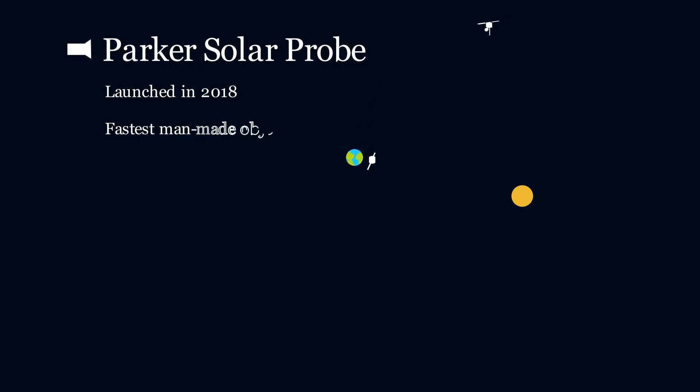Perhaps the most exciting mission is Parker Solar Probe, which was launched in 2018. This is the fastest ever man-made object and will travel closer to the sun than any other spacecraft, meaning it needs a large heat shield to stop it from burning up.